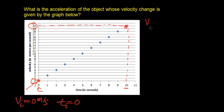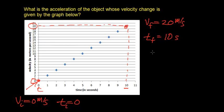I'm going to label this as my final velocity — 20 meters per second — and my final time is 10 seconds. To calculate the acceleration, I go back to the definition: acceleration is the change in velocity per change in time, which is how fast the velocity of the object changes.